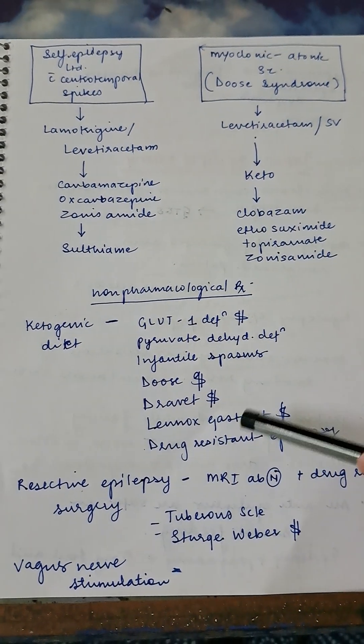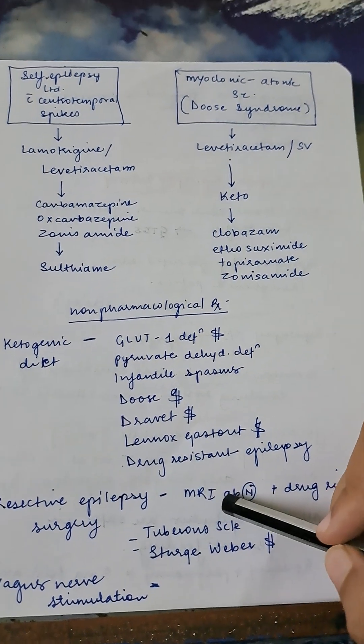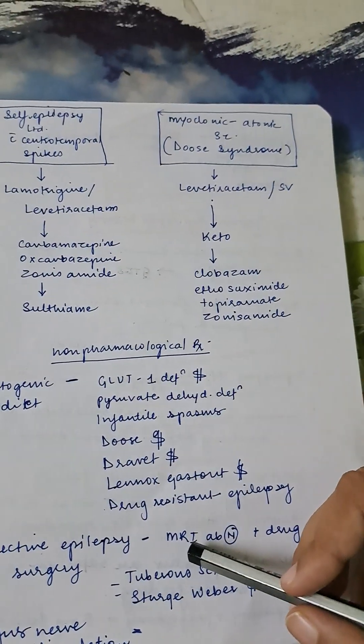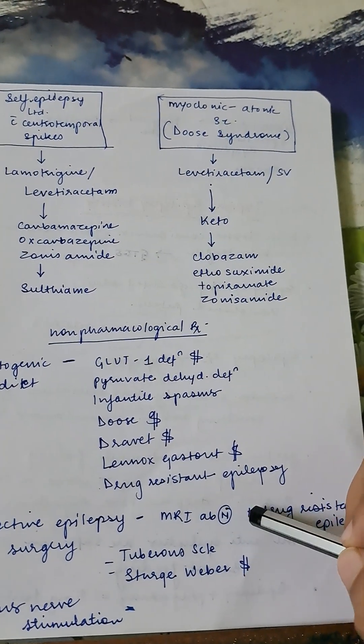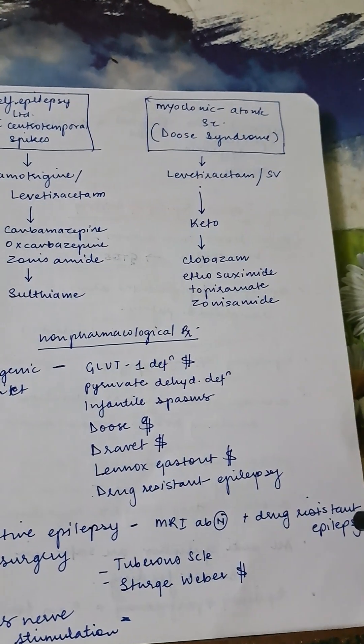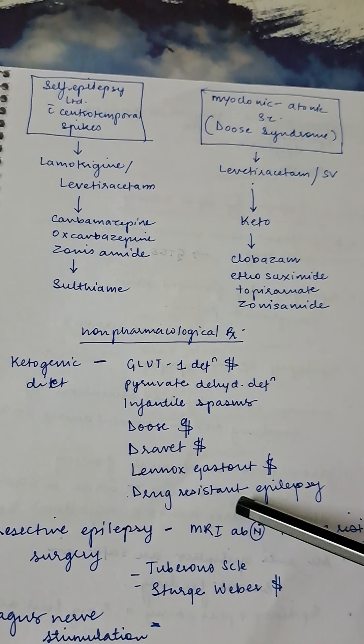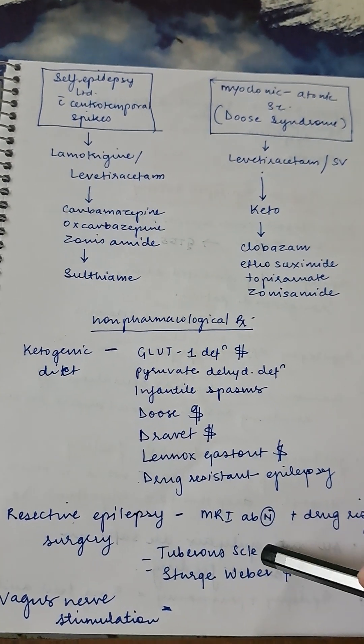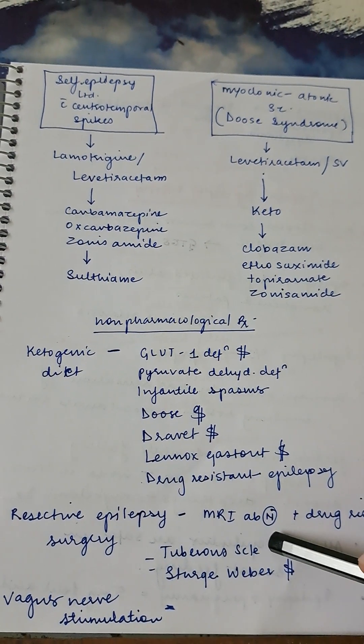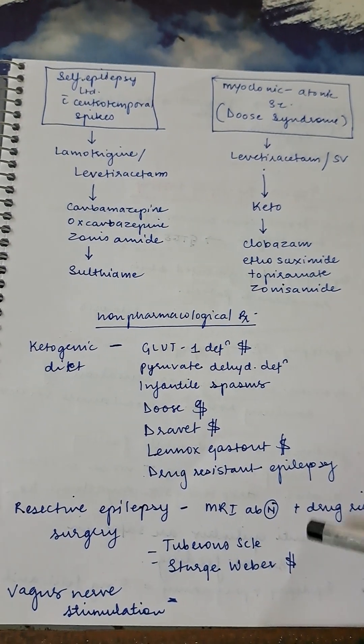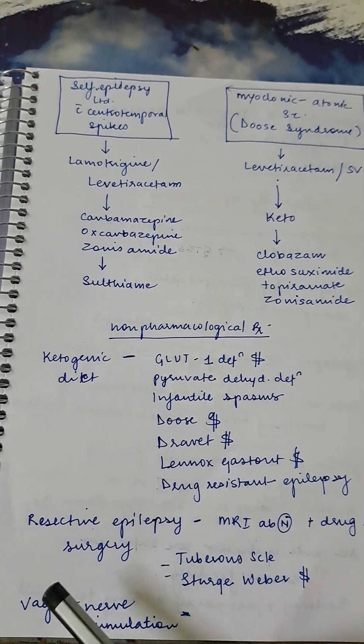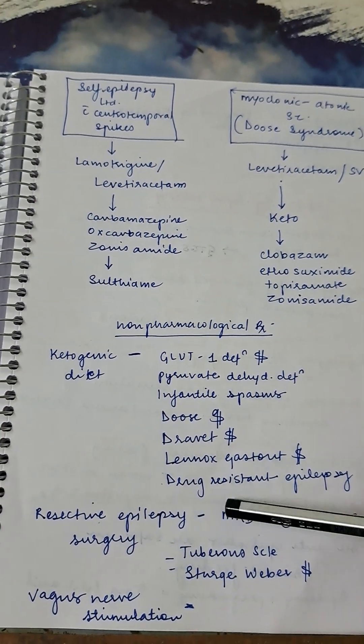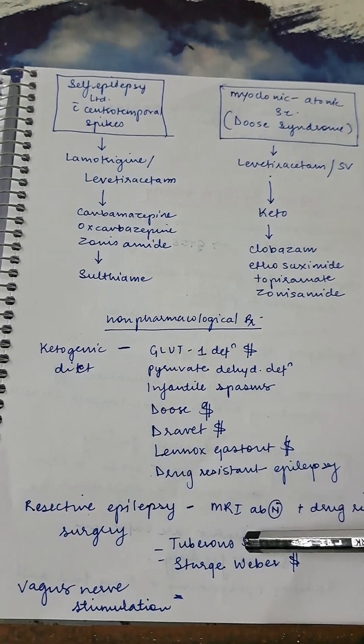Resective epilepsy surgery should be done—can be done—in MRI abnormalities with drug-resistant epilepsy. You have to refer this patient for resective epilepsy surgery and discuss with the parents, especially in cases like tuberous sclerosis and Sturge-Weber syndrome, and there are many other syndromes. Vagus nerve stimulation can be tried in such patients who are not willing for surgery or not doing surgery.